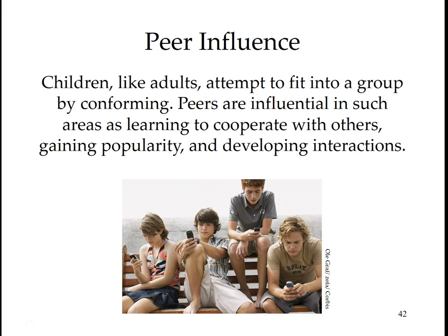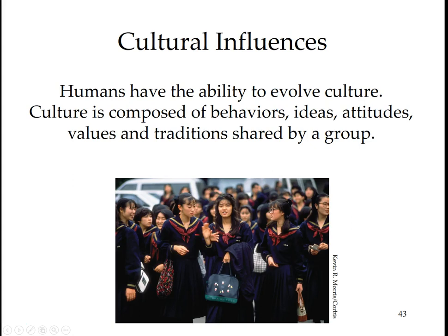Firm, conscientious, and responsive parents make a difference. Children, like adults, attempt to fit into a group by conforming. Peers are influential in learning to cooperate with others, gaining popularity, and developing interaction styles. Parental and peer influences are complementary — parents are more influential regarding education, discipline, responsibility, orderliness, charitableness, and ways of interacting with authority figures. Peers are more important for learning cooperation, finding the road to popularity, and inventing styles of interaction among people of the same age.